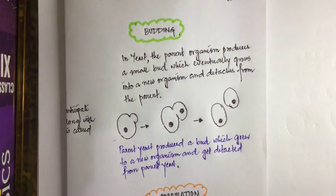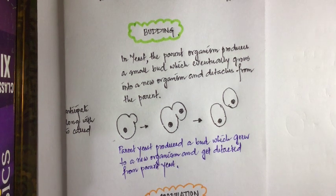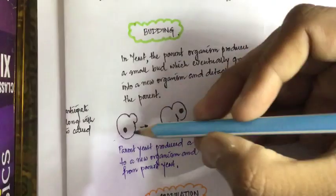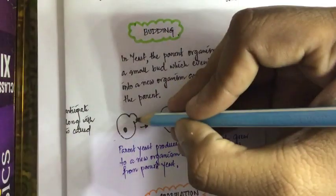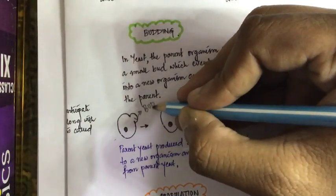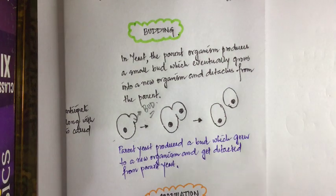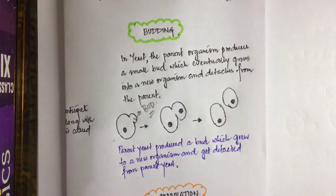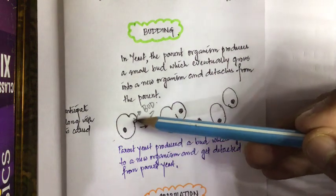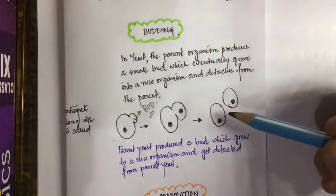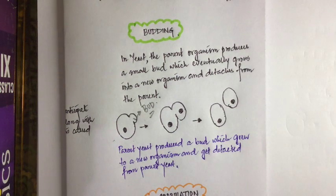The next type is budding. In case of certain organisms, like yeast, the organism produces a small bud-like structure. This bud-like structure eventually grows into a new organism and then gets detached from the parent's body. Such a process of asexual reproduction is called budding. You can see in the flow diagram that the parent yeast produces a small bud that grows into a new organism and then detaches from the parent's body.